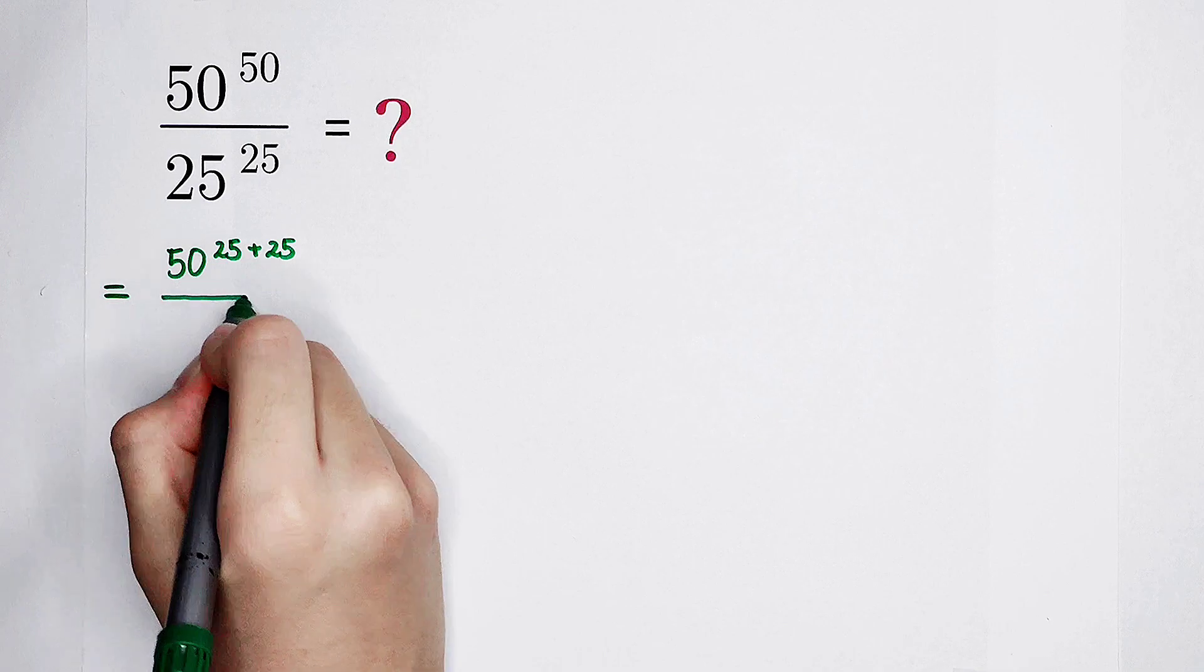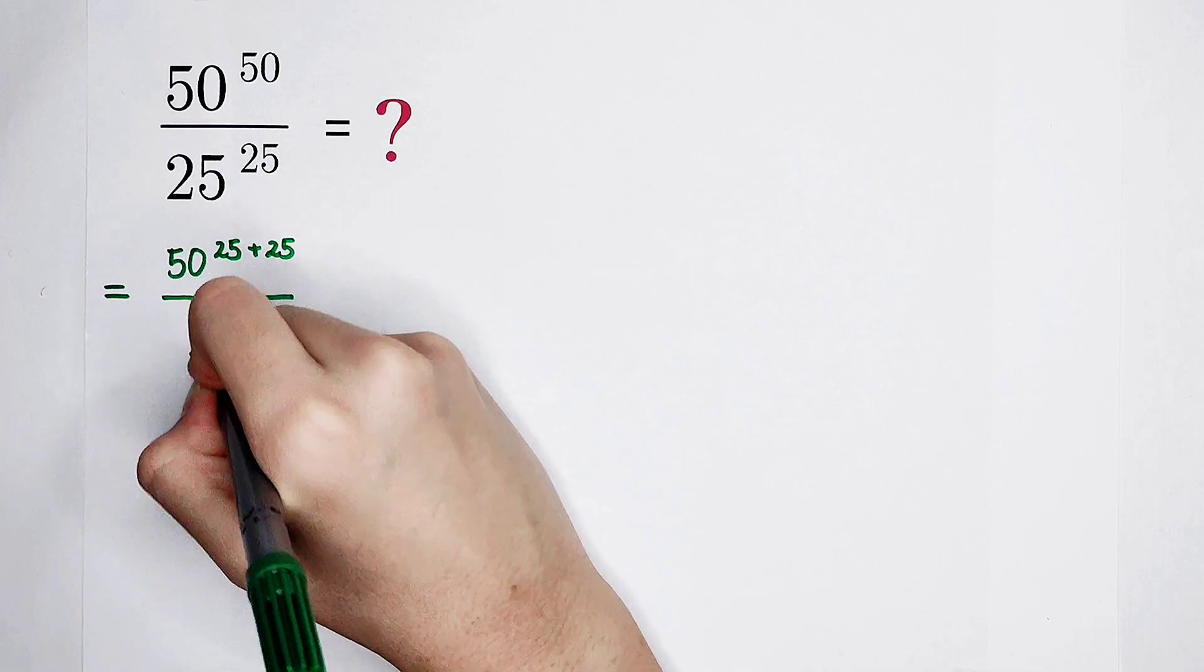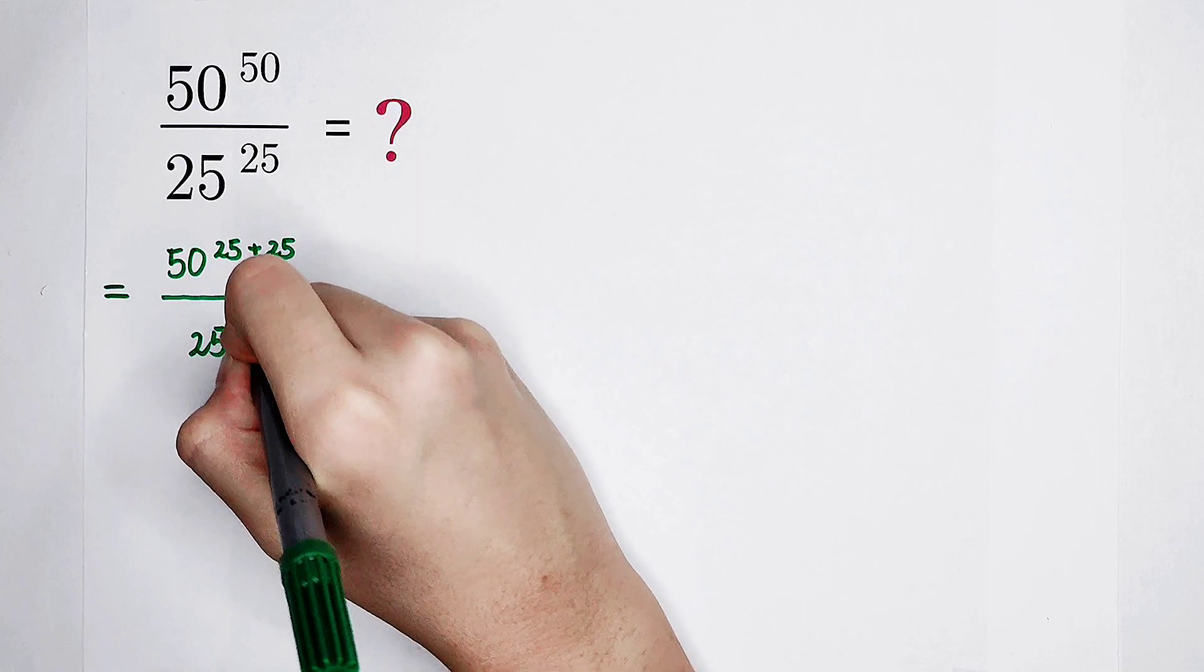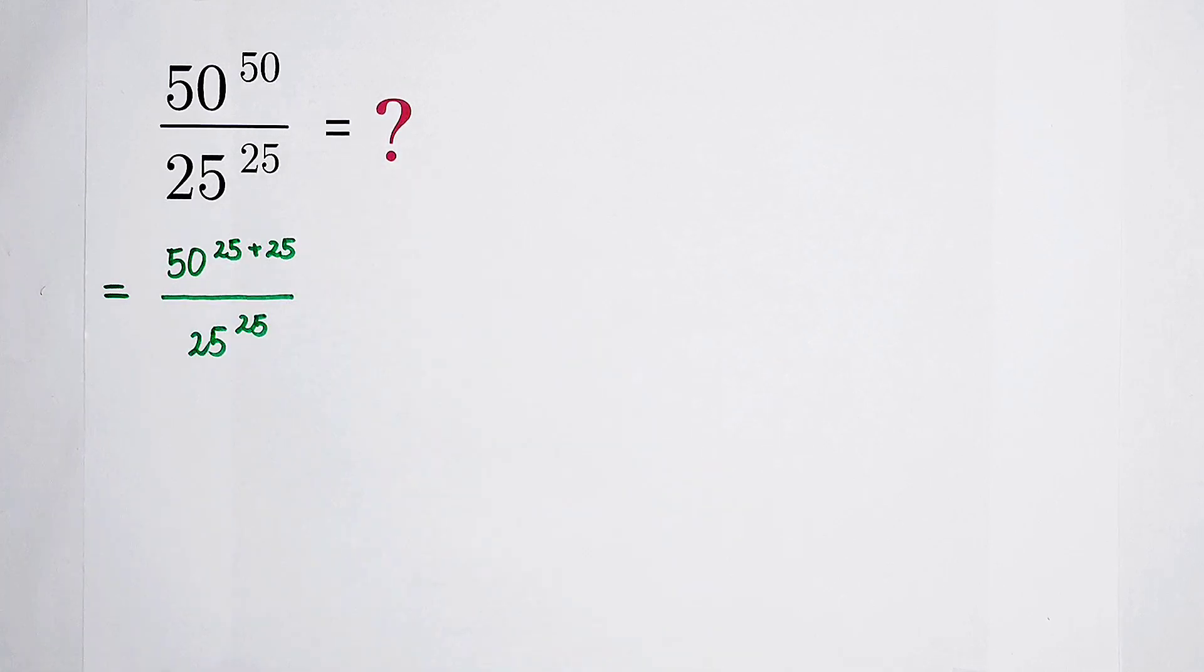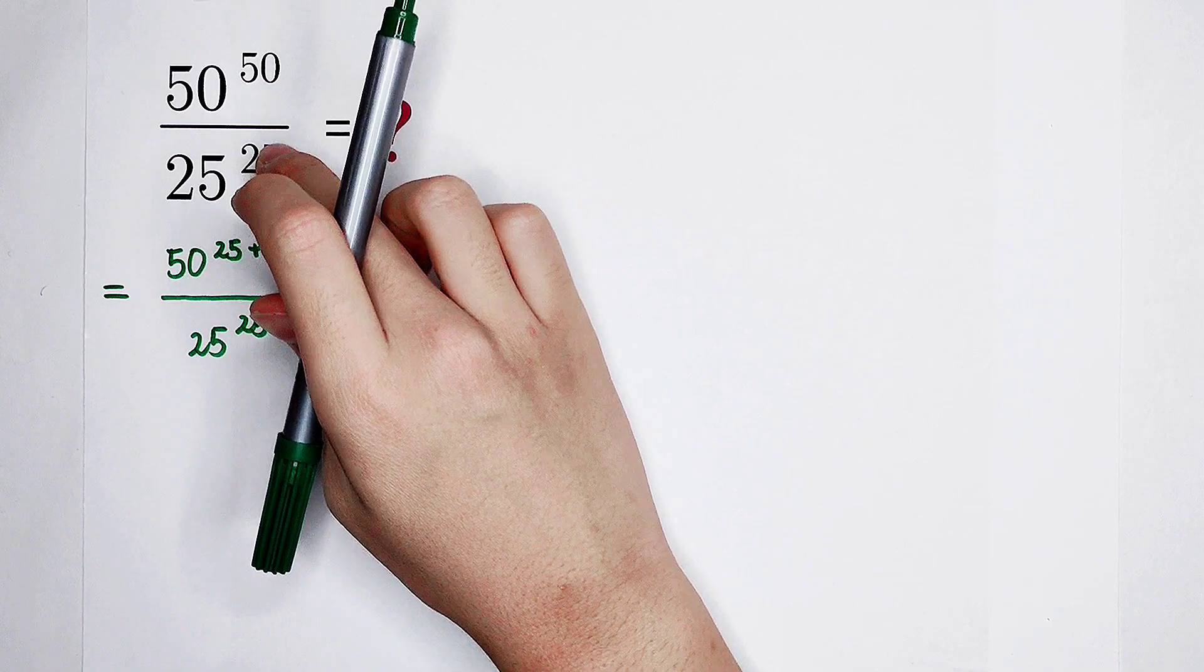And then, the denominator, it is very good, 25 to the power 25. It is not so big as 50 to the power 50. I'm going to try letting these two exponents have the same value, of course, 25.